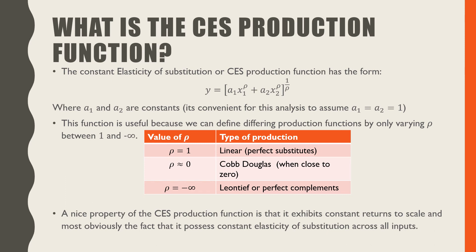A nice property of the CES production function is that it exhibits constant returns to scale, and most obviously it possesses constant elasticity of substitution across all inputs. So that's the CES production function. I hope this helps.